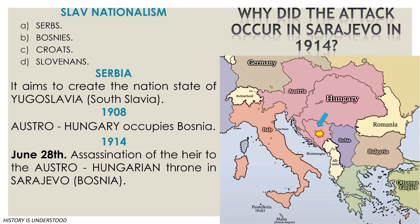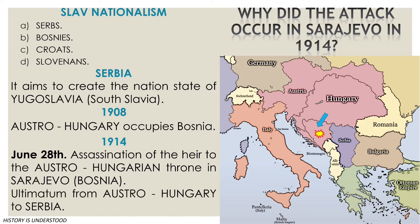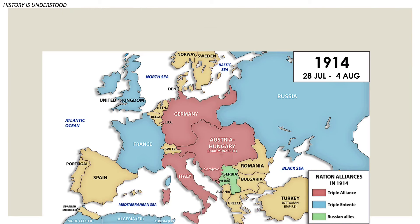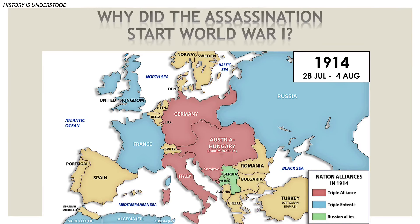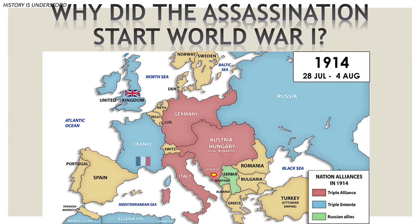The murder of the heir, Francis Ferdinand, will be committed by a Slavic nationalist of Bosnian origin, but Austro-Hungary will directly accuse Serbia of the attack and will give them a 30-day ultimatum. The Sarajevo assassination unleashed a process by which, in just one week, all the major European powers were at war and where the alliance systems created in previous years are decisive.